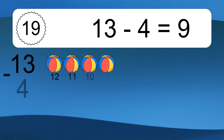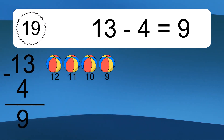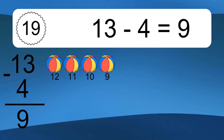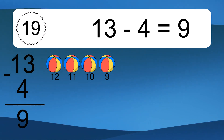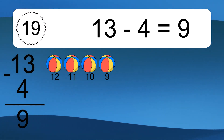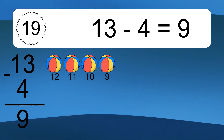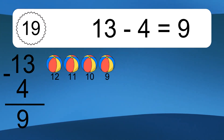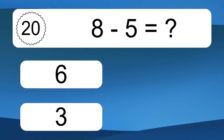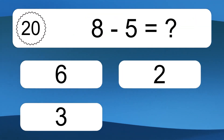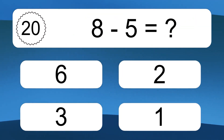13 minus 4 equals what? 13 minus 4 equals 9. Let's count it: 12, 11, 10, 9.